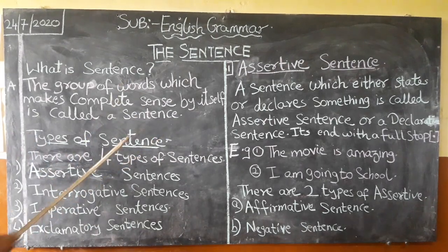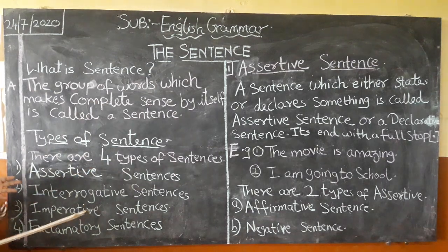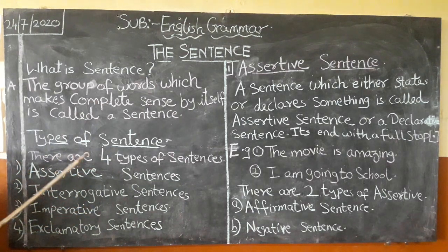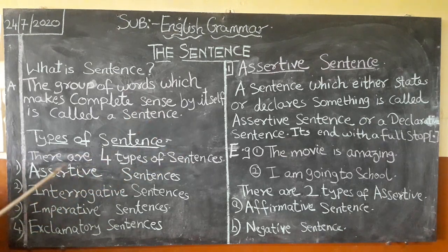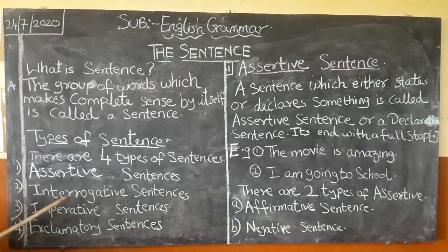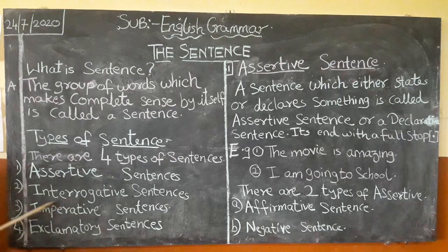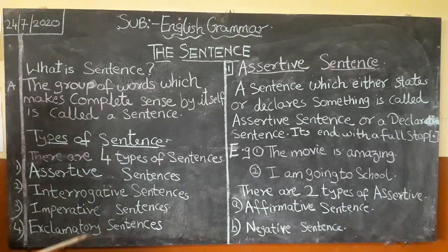Now children, there are types of sentences as well. There are four types of sentences: first is assertive sentences, second is interrogative sentences, third is imperative sentences, and fourth is exclamatory sentences.